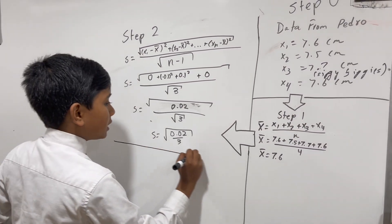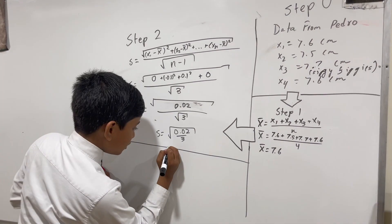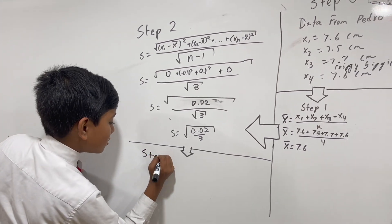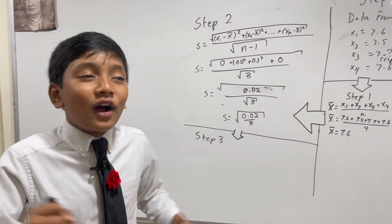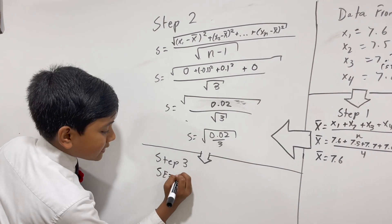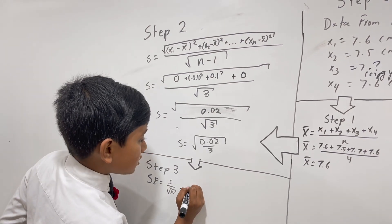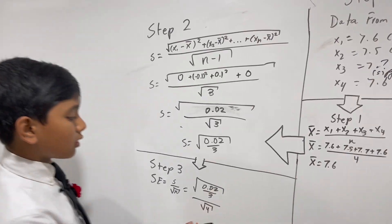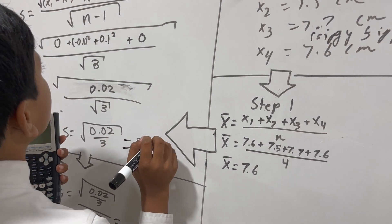So now we're going to move on to step number three. Step one was harder, step two was even harder, so what will step three be? Well, let's find out. It's relatively mellow - I'm just kidding. We're going to be finding the standard error, the standard deviation of the mean, which has this formula: s over the square root of n. So we already know what s is over the square root of n is 4, equals 0.082.